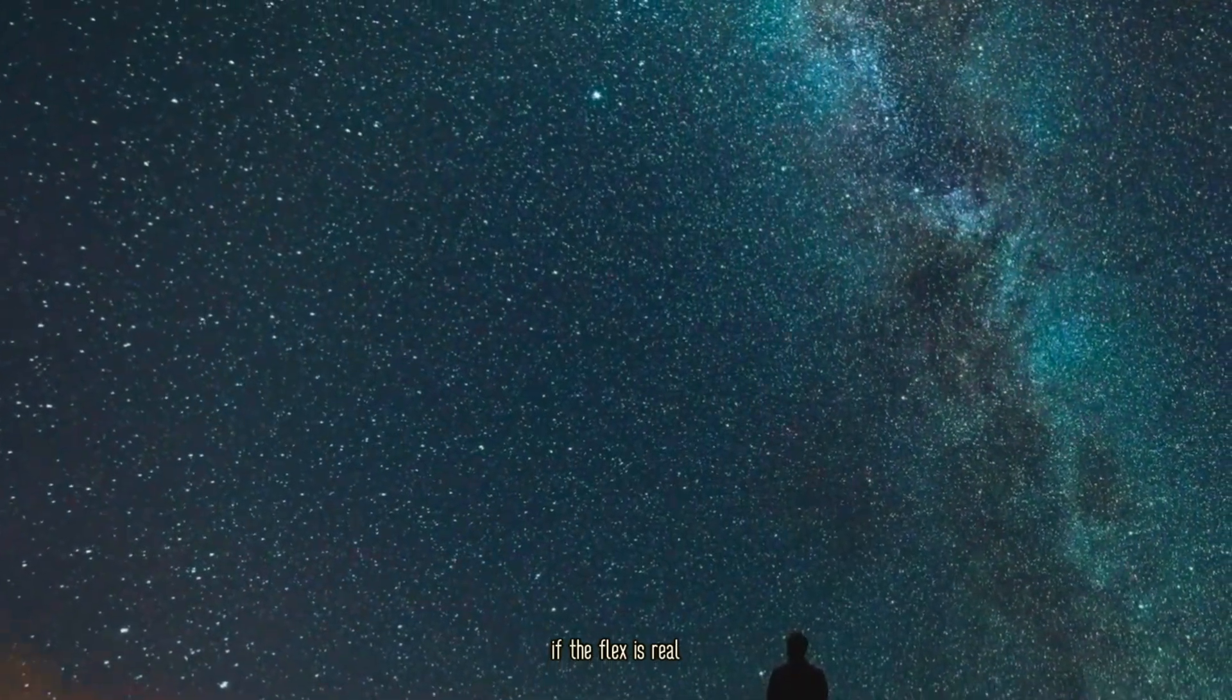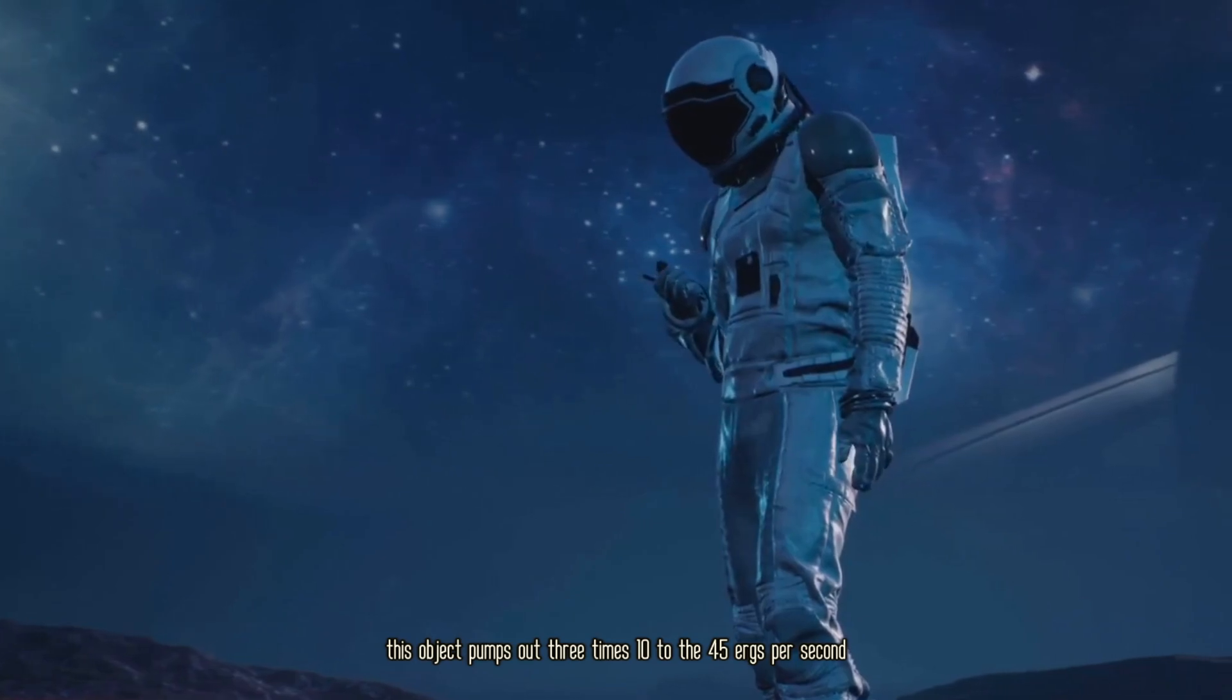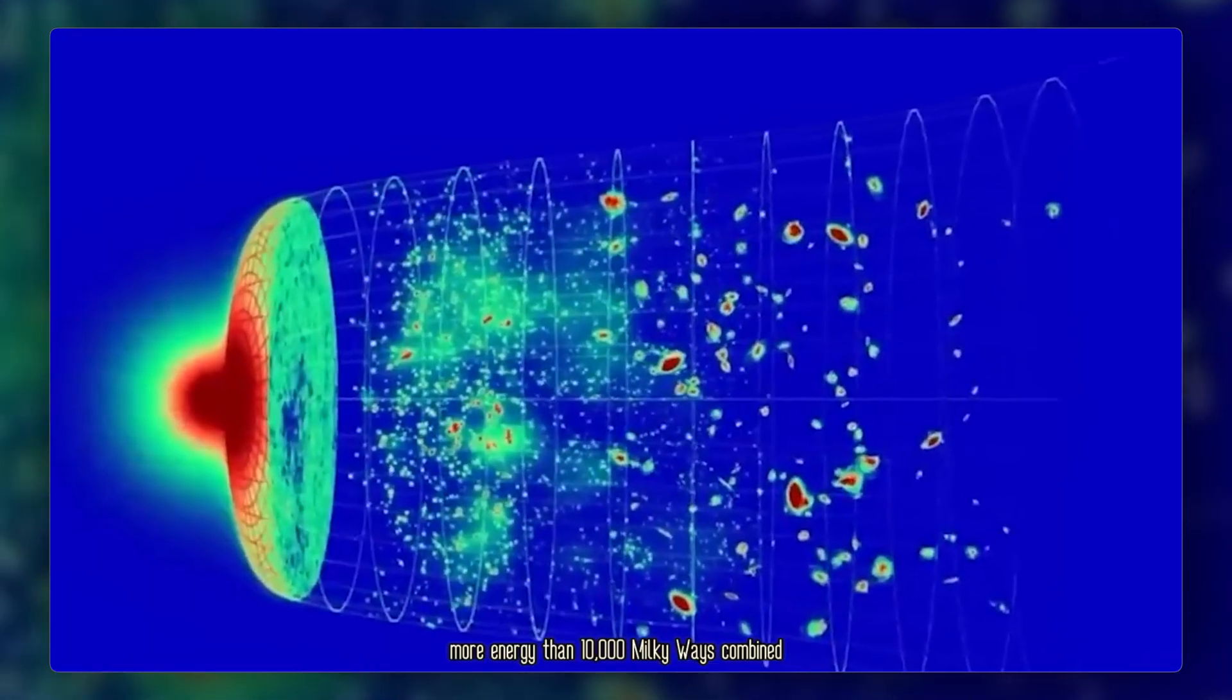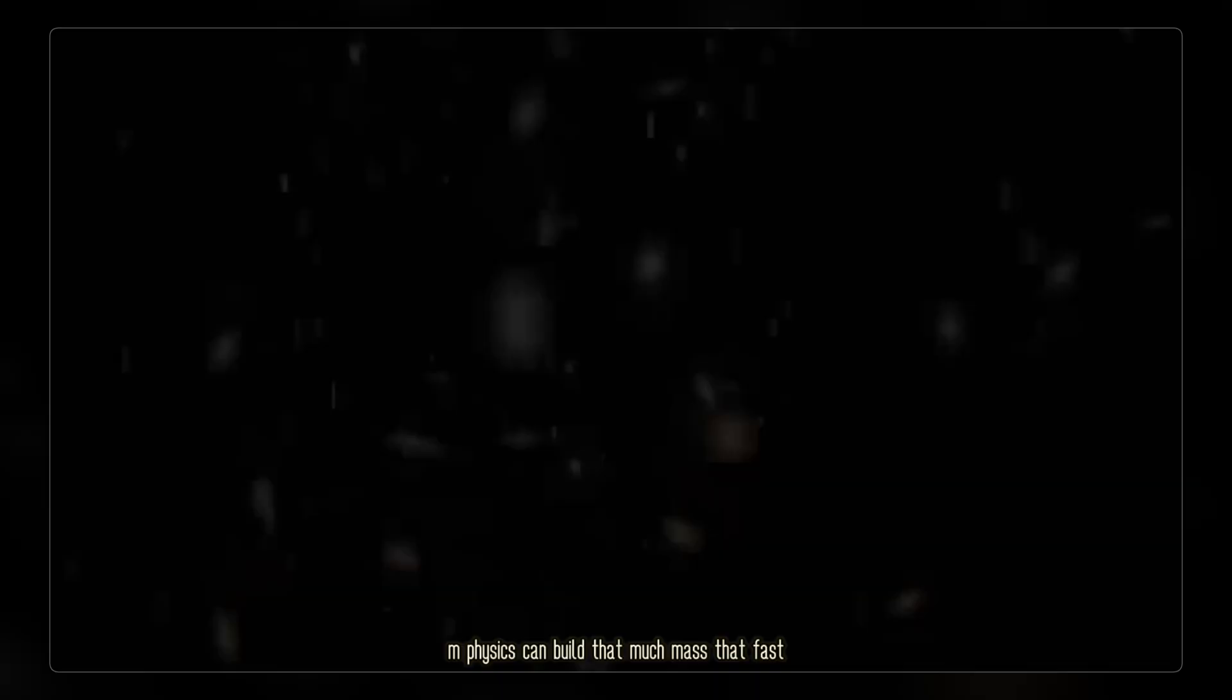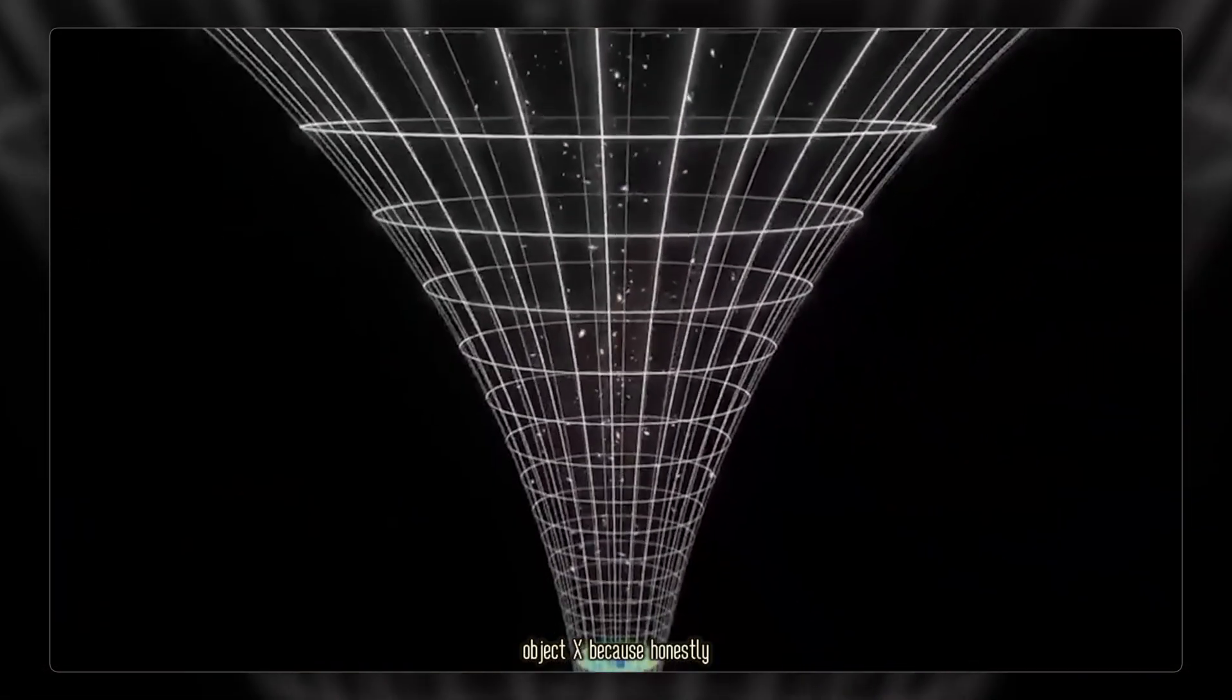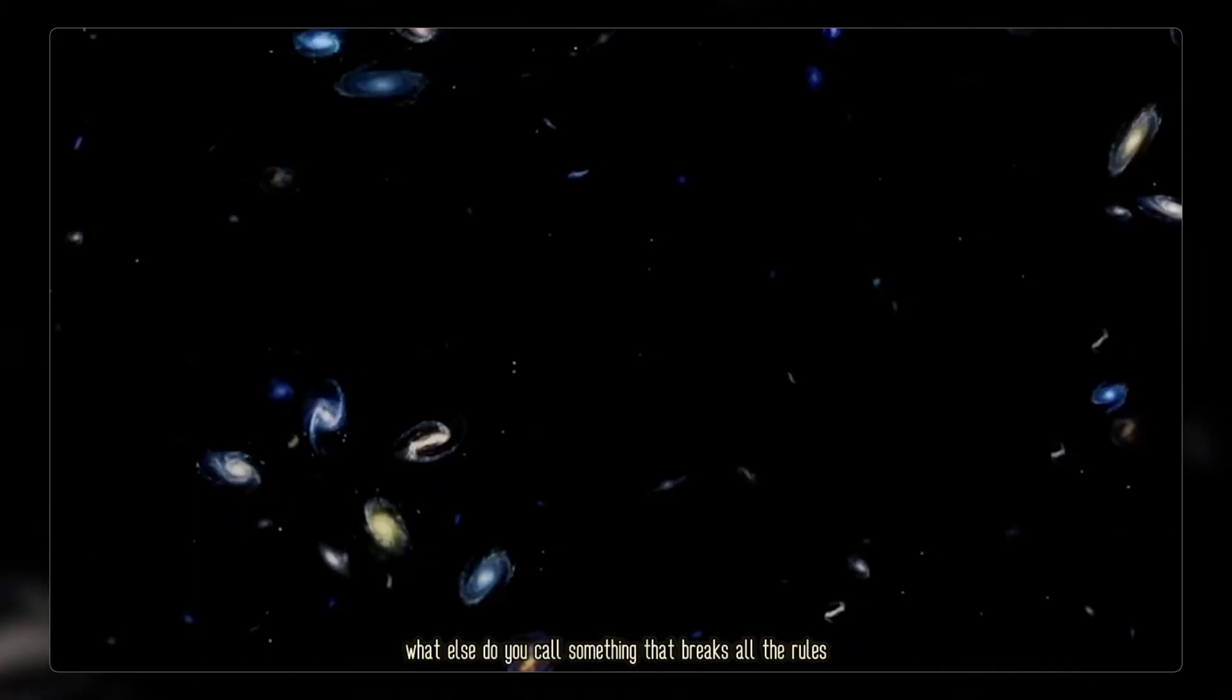If the flux is real, this object pumps out 3 times 10 to the 45 ergs per second, more energy than 10,000 Milky Ways combined. Nothing in lambda-CDM physics can build that much mass that fast. So, the team tabled a working nickname, Object X. Because honestly, what else do you call something that breaks all the rules?